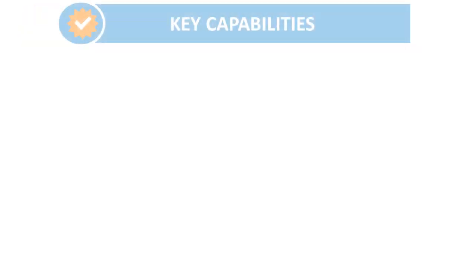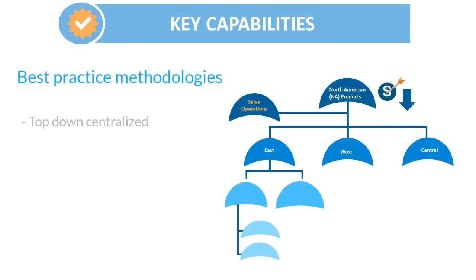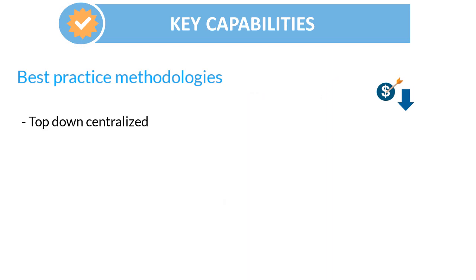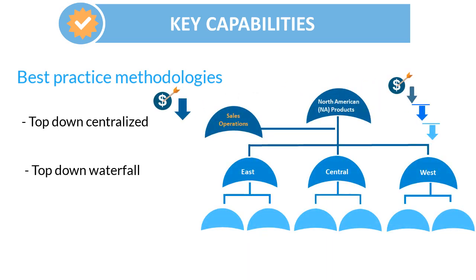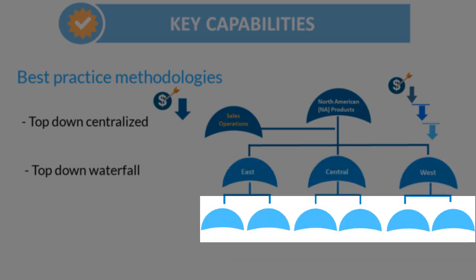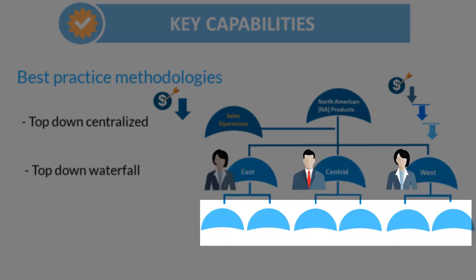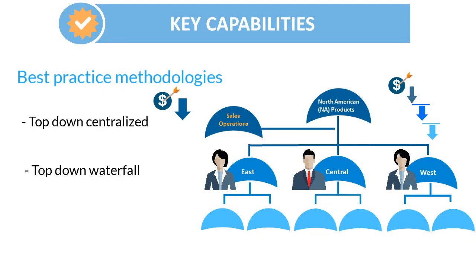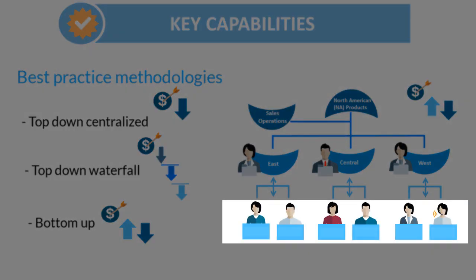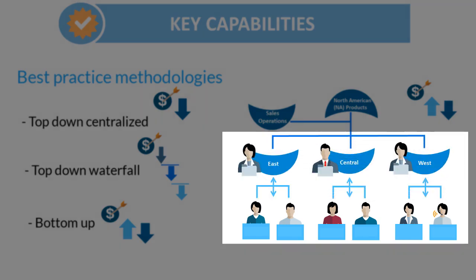Quota planning provides three best practice methodologies. Top-down centralized, where an overall quota target based on forecast data is allocated down to the lowest level in the hierarchy. Top-down waterfall, where an overall target is allocated step-by-step through each level in the hierarchy so regional or business sales leaders can set and manage quotas at their level. And bottom-up, so sales reps can propose quotas for their accounts that they collaboratively review and adjust with their managers.